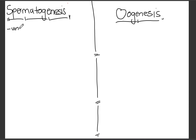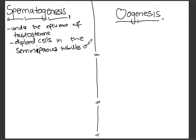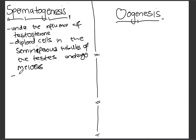Spermatogenesis is very easy and straightforward. The first point: under the influence of testosterone, diploid cells — cells having a full set of chromosomes, that's 46 chromosomes — found in the seminiferous tubules of the testes are then going to undergo meiosis, which is a cell division process, in order to form four haploid sperm cells.